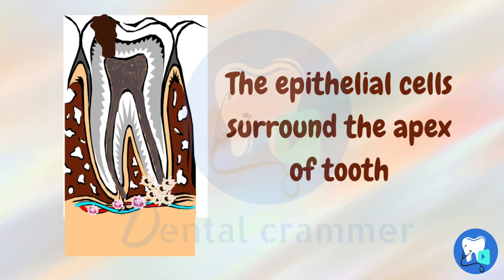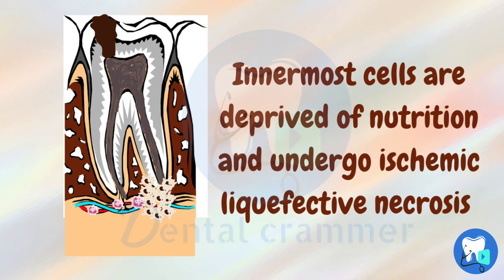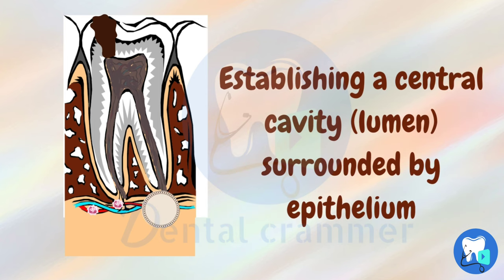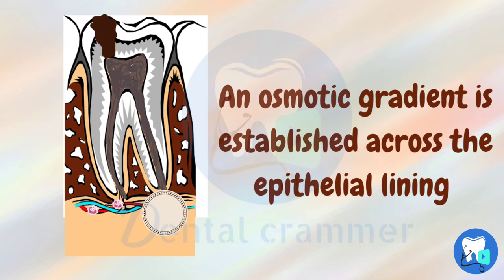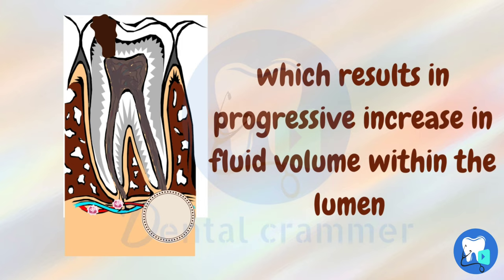These epithelial cells now surround the apex of the tooth. Due to the progressive growth of epithelial islands, innermost cells are deprived of nutrition and undergo ischemic liquefactive necrosis. Due to necrosis, a central cavity is formed which is surrounded by epithelium. As a result of osmotic gradient across the epithelial lining, there is continuous increase in fluid volume and the cyst continues to expand.